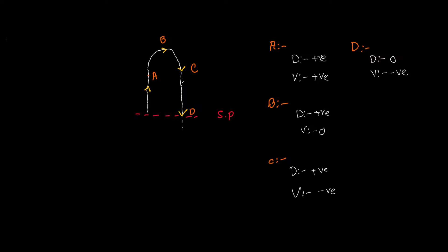The object continues moving downwards to point E. At point E, displacement is negative because the object is behind or below the starting point. Velocity is also negative because the object is moving backward or downward.